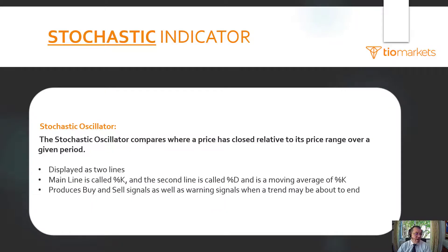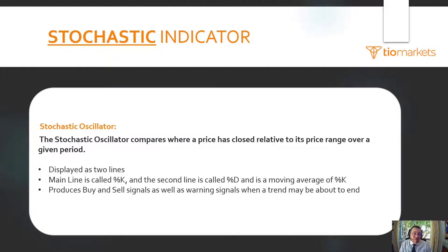The stochastic indicator is an oscillator, and what that means is it oscillates — it goes between an extreme low to an extreme high — and it helps us measure where today's price has closed relative to the closing prices over a particular period. It's a very popular indicator used throughout technical analysis in various forms such as RSI, and it's a momentum indicator.